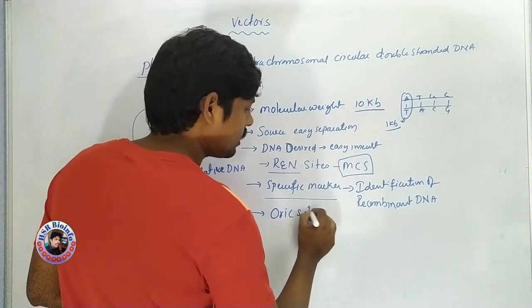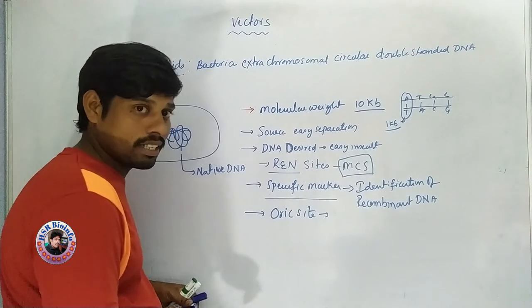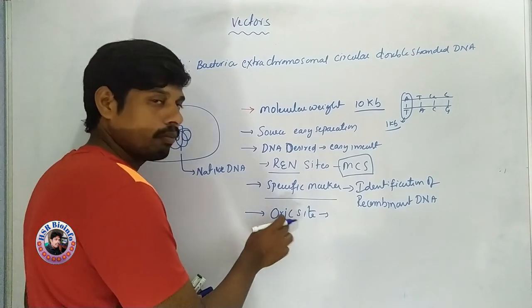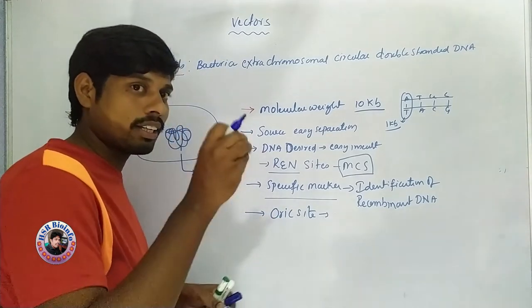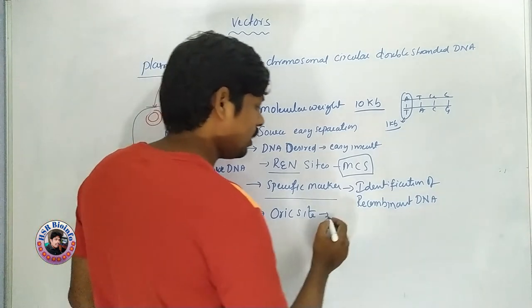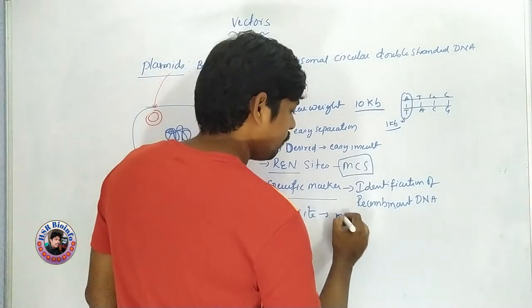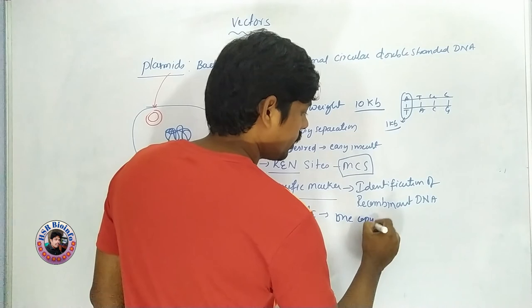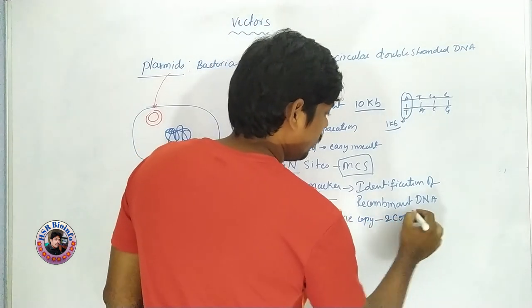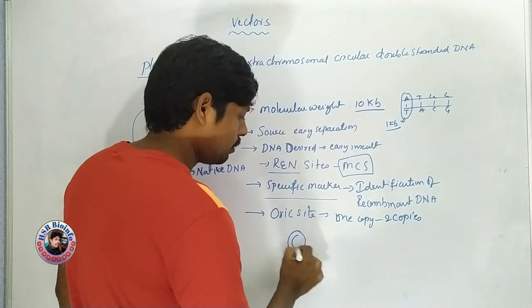The origin of replication is the replication site required for plasmid replication.